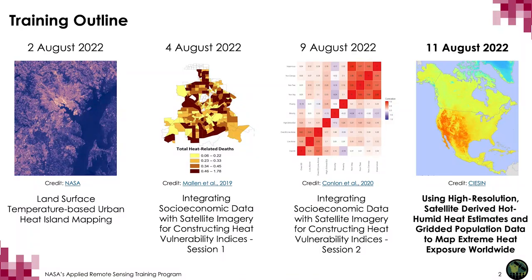In the first part of the webinar series, we presented on assessing the surface urban heat island derived from land surface temperature data using NASA Earth observations. In the second and third parts, we presented on heat vulnerability indices — why they are important and how to construct them for your urban area of interest. In this concluding part, we'll be presenting on mapping extreme heat exposure.